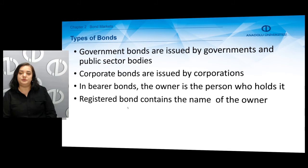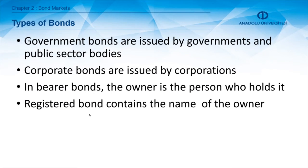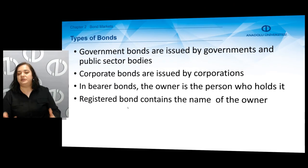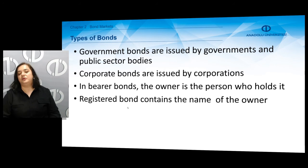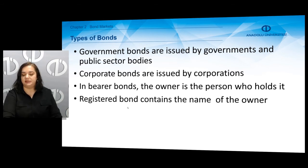Government bonds are issued by governments and public sector bodies, whereas corporate bonds are issued by corporations. There are bearer bonds in which the owner is the person who holds the bond. For registered bonds, the registered bond contains the name of the owner — so ownership is not determined by holding the bond; it is issued with the name of the owner.